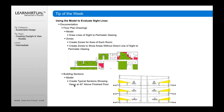You can also use building sections — do a section through the building and show information for sections showing views at 40 inches above finished floor. All of this can be developed directly out of the model as part of your documentation.